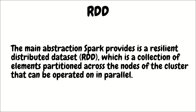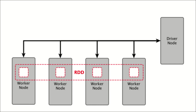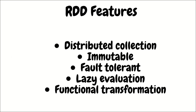Diagrammatically, we have a driver node with edges and arrows pointing to multiple worker nodes, and the RDD has been stretched across those worker nodes. It's shown in dotted fashion because the data portions stay on these worker nodes — not a single worker node contains all the data. The data is divided across multiple nodes, which is the principle of RDD.